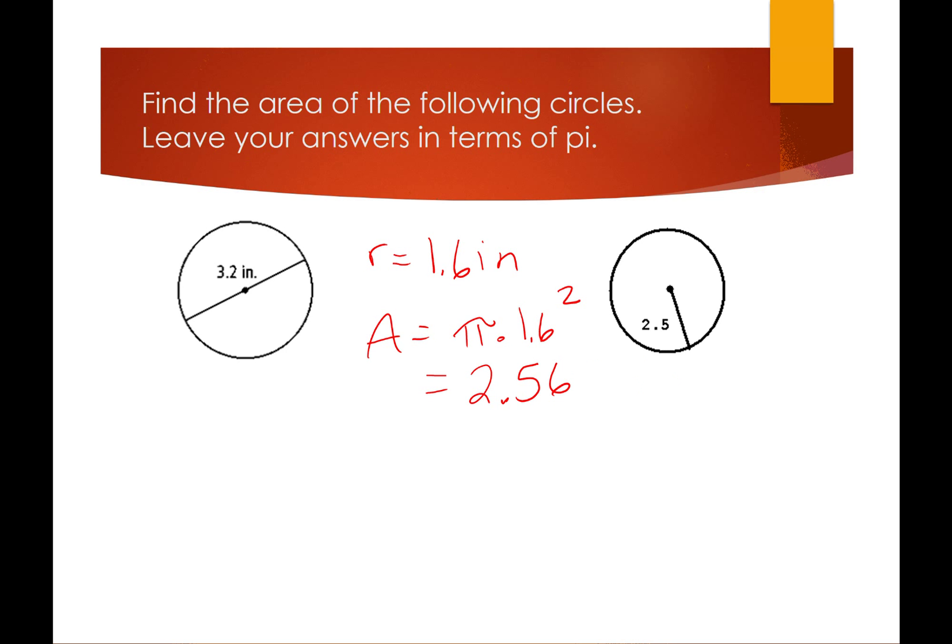All right, here my area is going to be π times 2.5 squared, and that's 6.25, so 6.25π units squared.